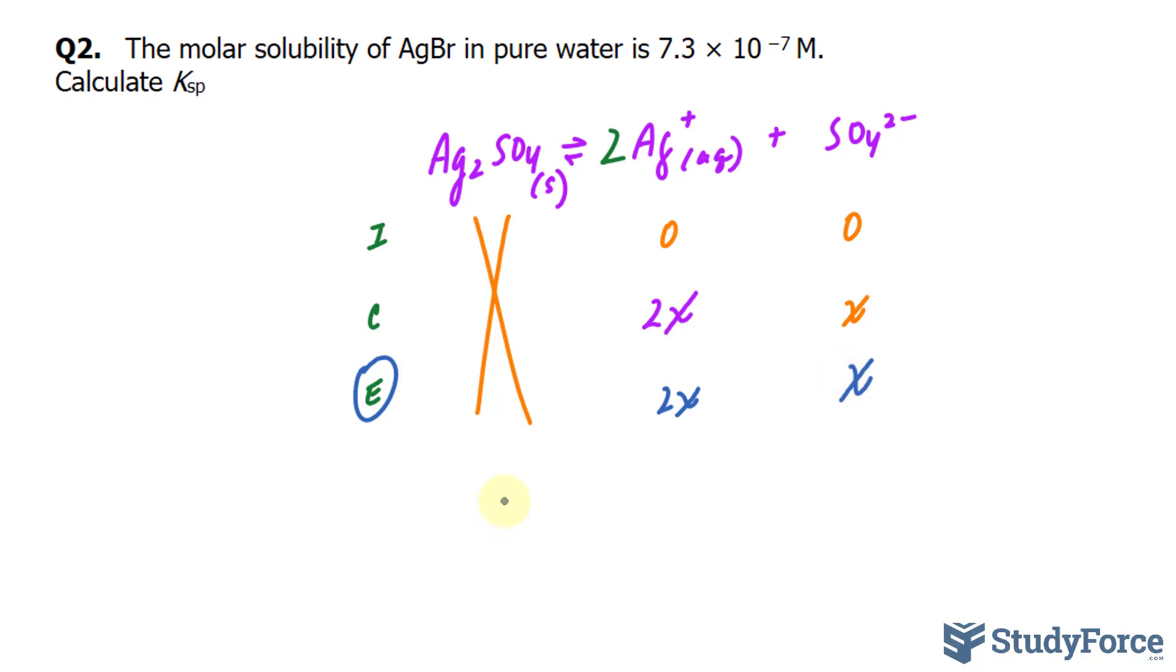Now the equilibrium expression. The equilibrium expression, Ksp, is equal to the concentration of the products over the concentration of the reactants. Since our only reactant is the solid, we don't worry about the denominator of this expression. So let me show you what I mean. I have the concentration of Ag+ at equilibrium, that's being raised to the power of 2 because of the coefficient, times the concentration of SO4 2- at equilibrium.